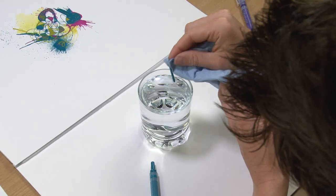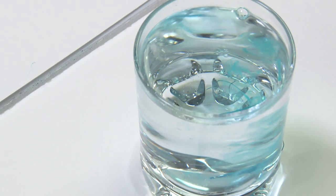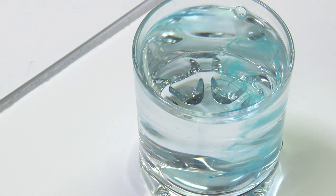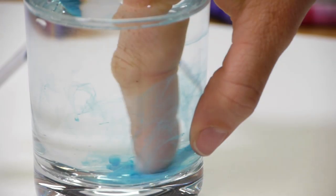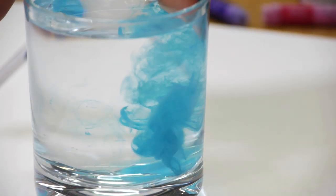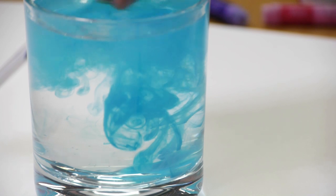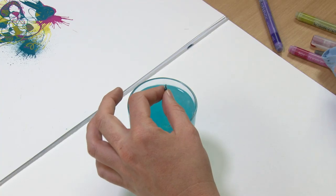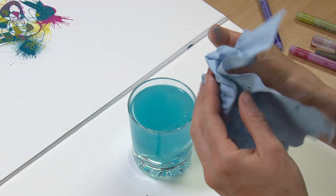Just drop the nib into the water and let it soak for a few minutes and then we'll get the nib out. Give it a wipe again in the tissue.